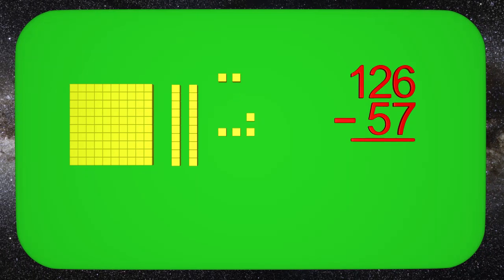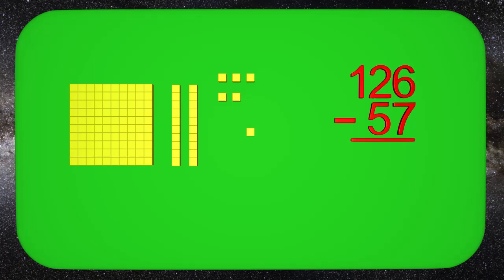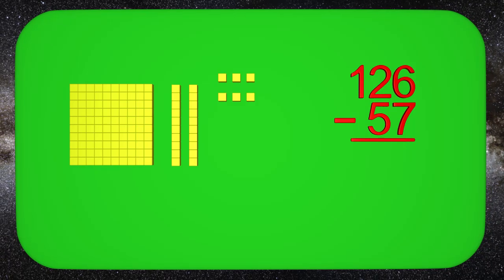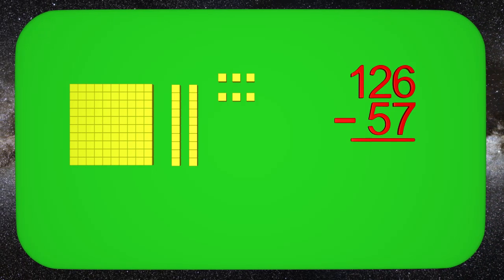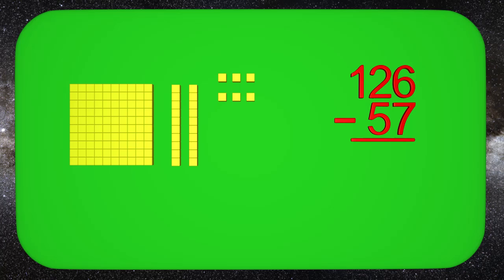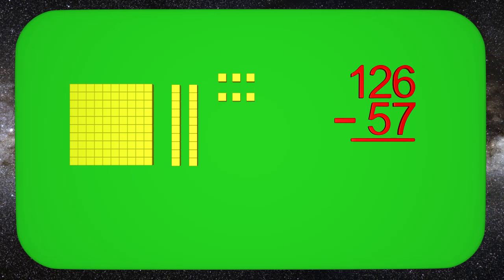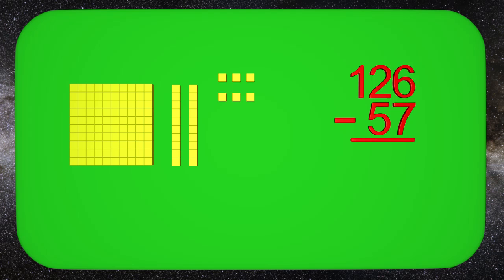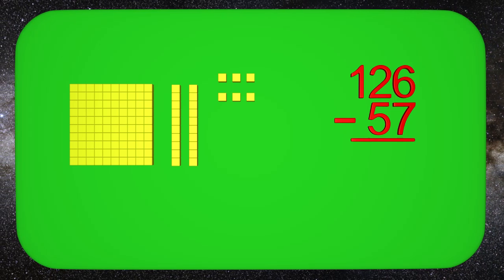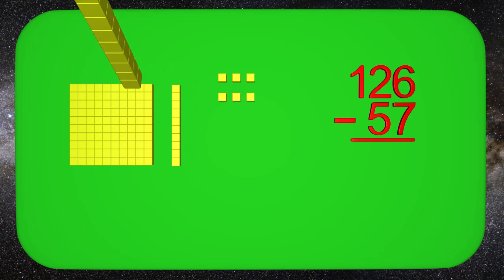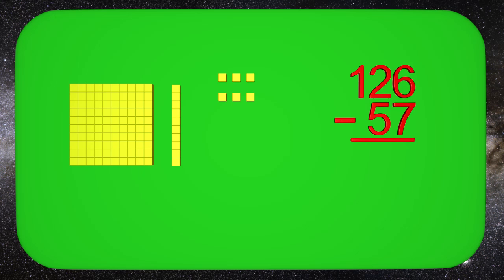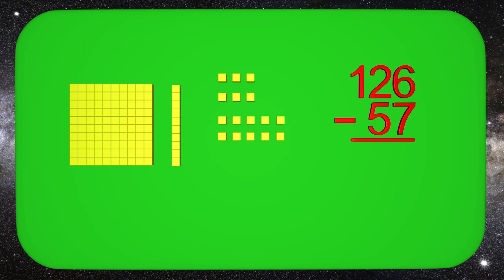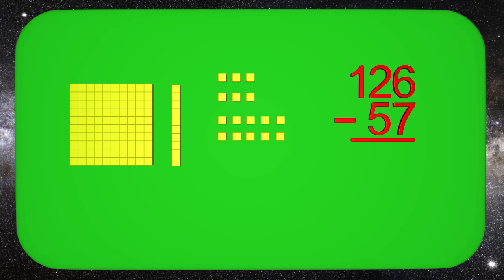1, 2, 3, 4, 5, 6... Wait! I can't take away 7 because there are not 7 ones blocks! Do you know what I need to do? What I need to do is trade in one of my tens blocks for ones blocks. So I take away one of my tens blocks and I get 10 ones blocks from it.